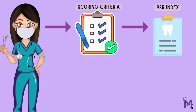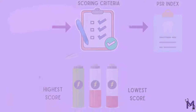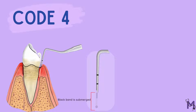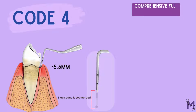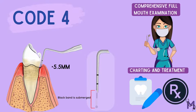To understand how the scoring needs to be done, let's see the scoring criteria for the PSR index, starting with the highest score. A score of code 4 is given when the black band of the WHO probe completely disappears, indicating the presence of a pocket with a depth of more than 5.5 mm. In such cases, a comprehensive full mouth examination along with charting and treatment is needed.